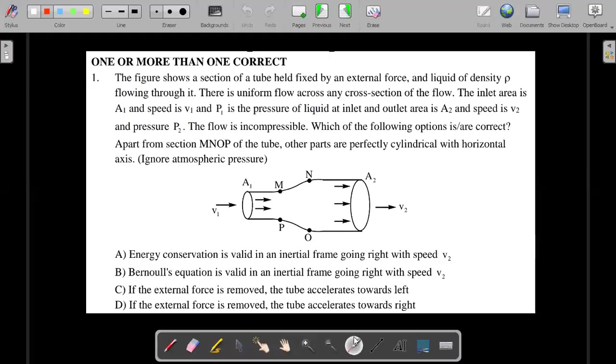Here's the formal wording of the question. The figure shows a section of tube held fixed by an external force with liquid of density ρ flowing through it. There is uniform flow across any cross section. The inlet area is A1 with speed v1 and pressure P1, and outlet area is A2 with speed v2 and pressure P2. The flow is incompressible. Apart from section MNOP, the tapered section, other parts are perfectly cylindrical with horizontal axis. Ignore atmospheric pressure throughout.